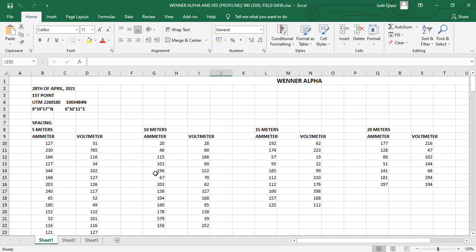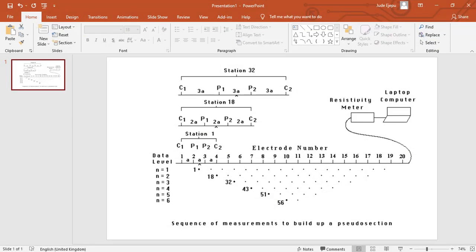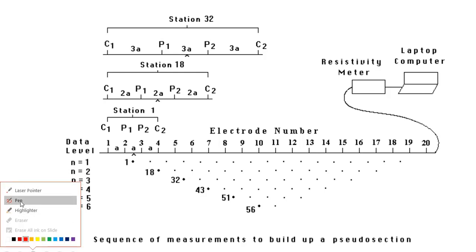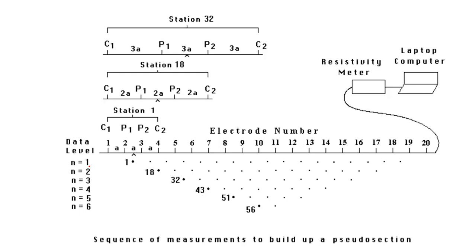It's important to build your intuition on how these readings were actually acquired. In doing a 2D survey, this is the setup of a normal Wenner array sounding. For N equals 1, you take a number of readings from your four-electrode setup. You have C1 as the current electrode, P1 and P2 as the potential electrodes, and C2 as the second current electrode.